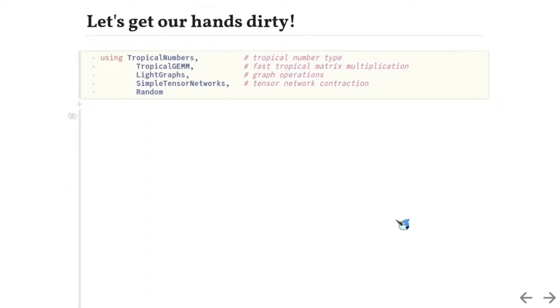Now, we are ready to get our hands dirty. We first import several packages, including tropical numbers, defining the tropical number types, and tropical GMM, defining the fast tropical matrix multiplication, as well as light graphs and simple tensor networks for fast graph and tensor network operations.